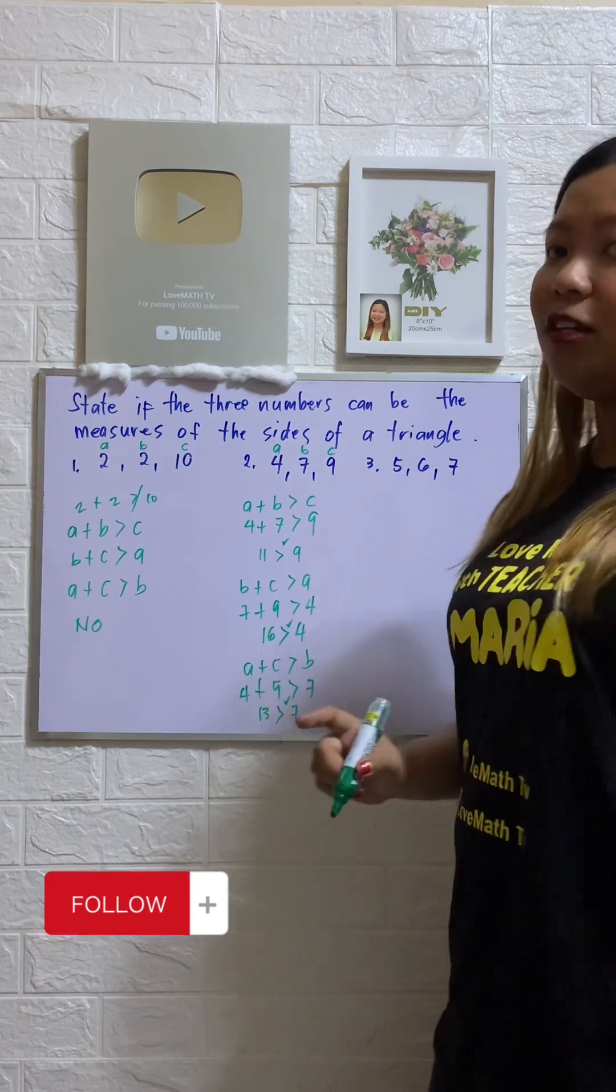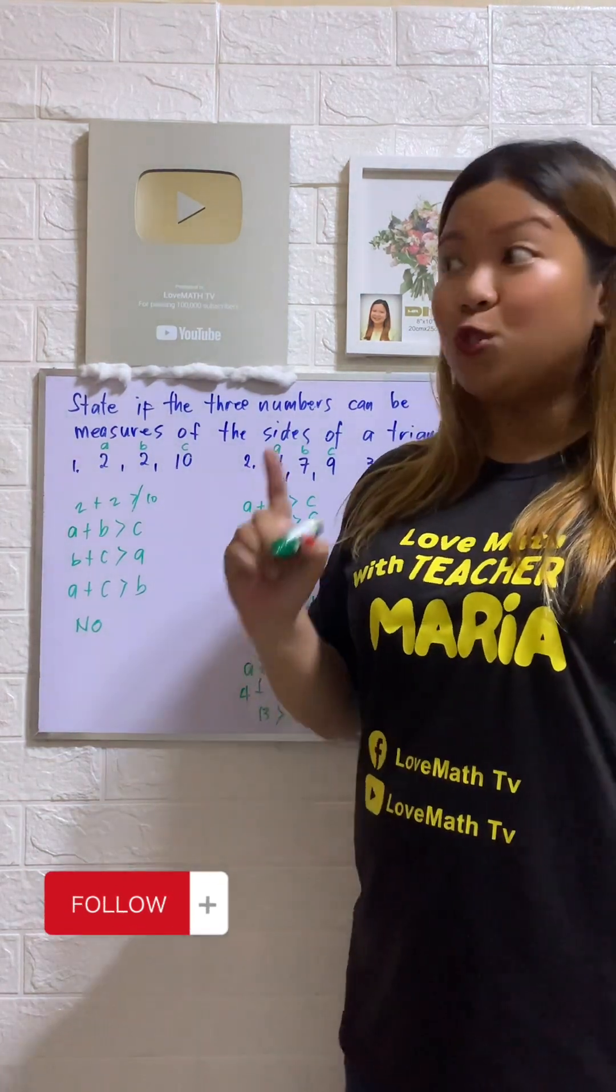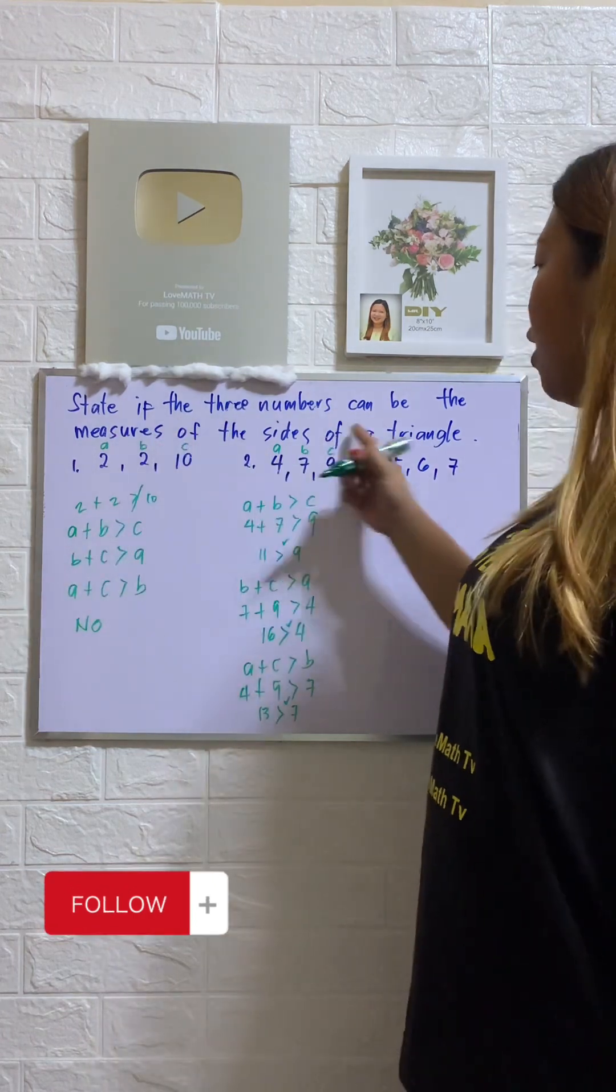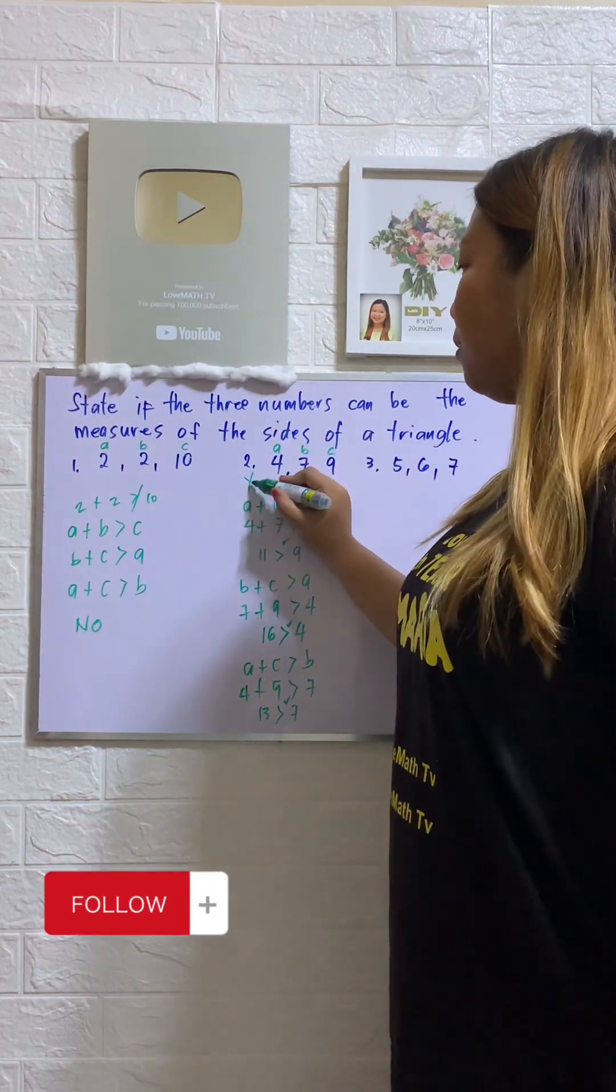So the three conditions are satisfied. So it means 4, 7, 9 can be the measures of the side of our triangle. So for number 2, we have yes.